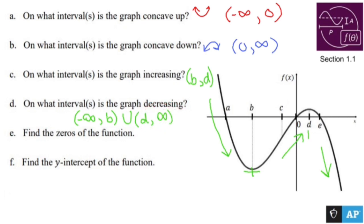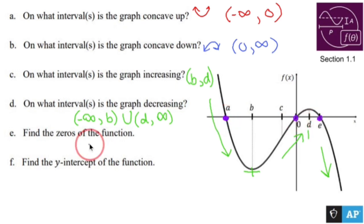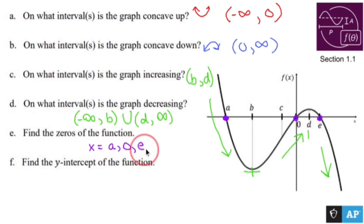Find the zeros of the function. The zeros are where the line crosses the x-axis, here at A, here at 0, and here at E. So we will say the zeros are when x is equal to A, when x is equal to 0, and when x is equal to E.